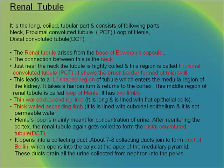Henle's loop is mainly meant for concentration of urine. After re-entering the cortex, the renal tubule again coils to form the distal convoluted tubule, which opens into a collecting duct. About 7 to 8 collecting ducts join to form the duct of Bellini, which opens into the calyx at the apex of the medullary pyramid, draining all urine collected from the nephron into the pelvis.